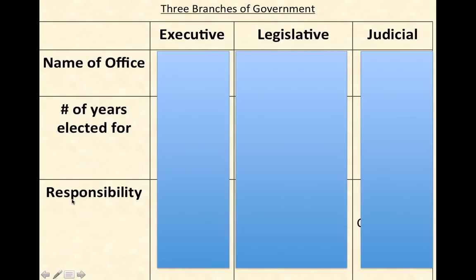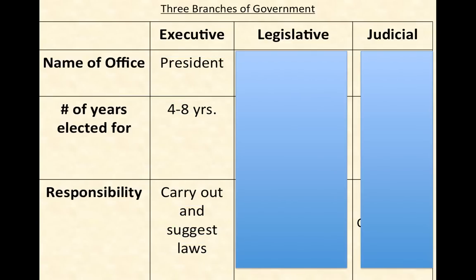Let's talk about the three branches of government in the United States political system and in many other countries' political systems. There are three branches: the executive branch, the legislative branch, and the judicial branch. The name of office in the executive branch is the president. The president can be in office for four to eight years — one term is four years, and the president can be re-elected for another four years.